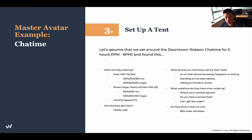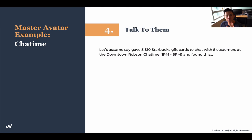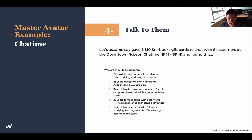Do they drink in or take out? 80% order and leave. These are all great insights just from sitting there and observing. I can guarantee more than 80% of people opening a restaurant would never conduct research this thorough. Step four: talk to them. We gave out five $10 Starbucks gift cards — a pretty handsome amount for five to ten minutes. People will take it up with no problem. We found a 21-year-old who came solo to study, a UBC business student with zero income, and a 23-year-old who came with his girlfriend, an accountant earning $40,000 salary. By asking these things, we draw patterns — this gets us closer to our ideal customer avatar.